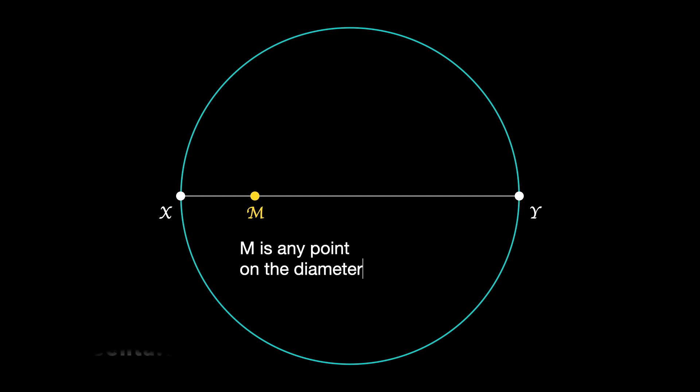So we start with a circle and we draw the diameter of the circle. Suppose the two endpoints are X and Y of the diameter. Choose any point M on this particular diameter. M can be any point, but just for fun let's not make M the center. M is some other point suppose.